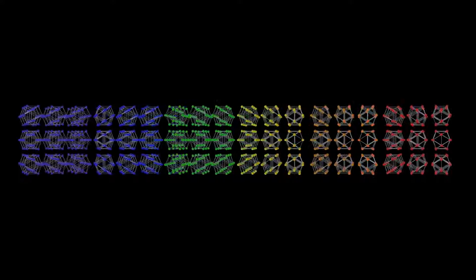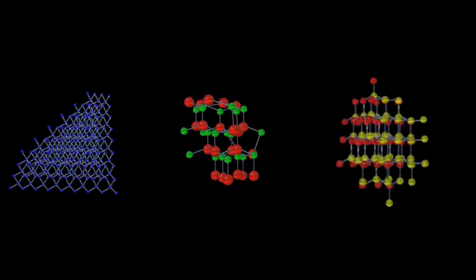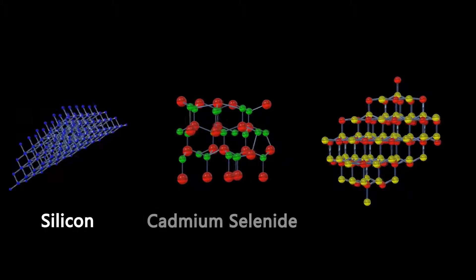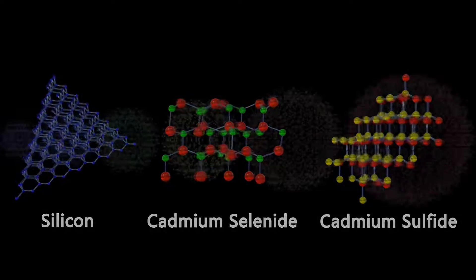Quantum dots are small semiconducting nanocrystals that can be made up of a variety of different elements such as silicon, cadmium selenide, or cadmium sulfide. They range in size from 2 to 10 nanometers. One nanometer is about the width of two silicon atoms.